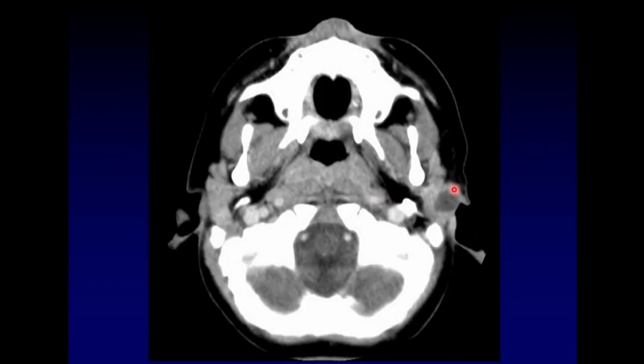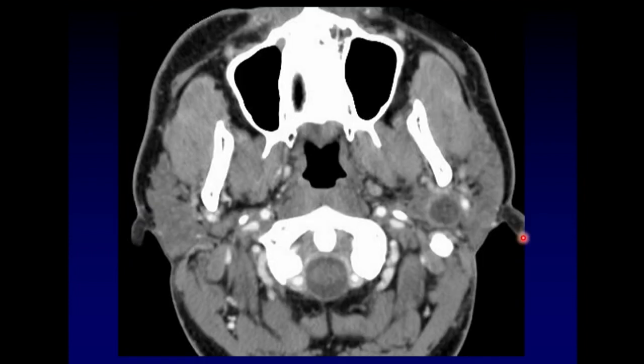This is a first branchial cleft cyst. It characteristically runs parallel to the external auditory canal and then dives at some point into the external auditory canal, because we can think of these as duplications of that external auditory canal. And sometimes you just get a simple cyst of the parotid — a simple cyst surrounded by parotid tissue and nothing more exciting than that.